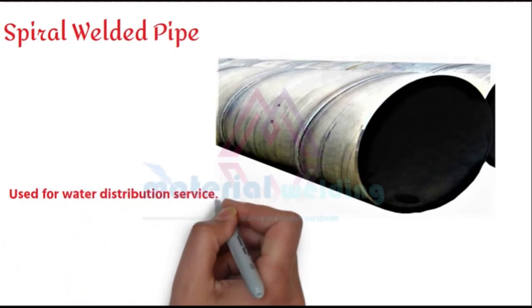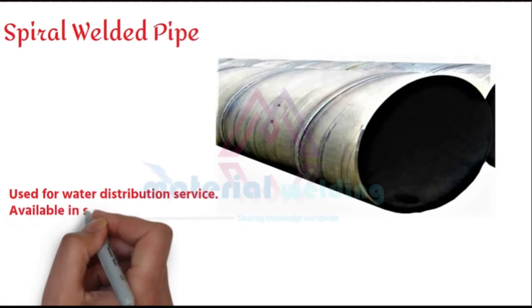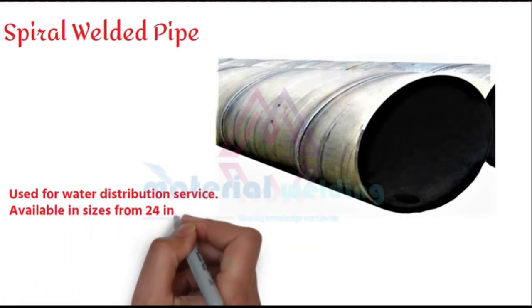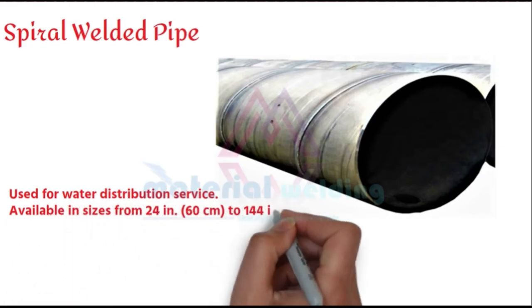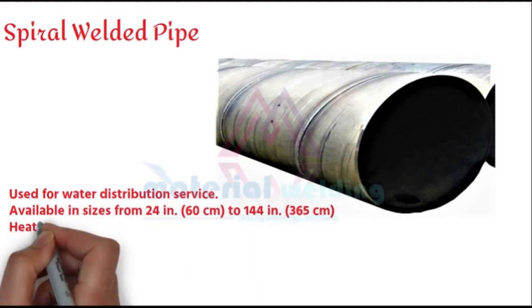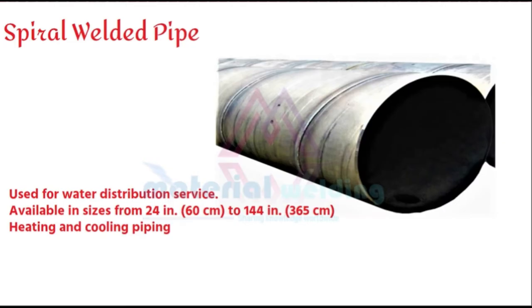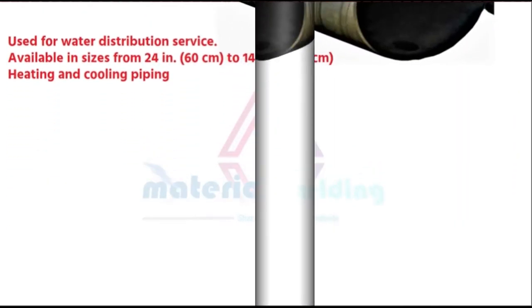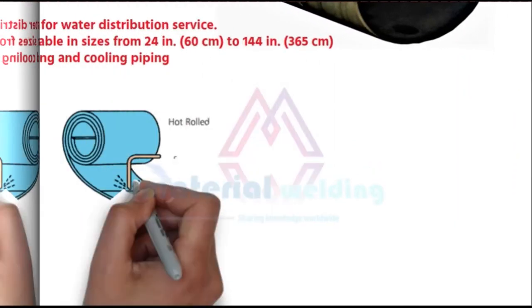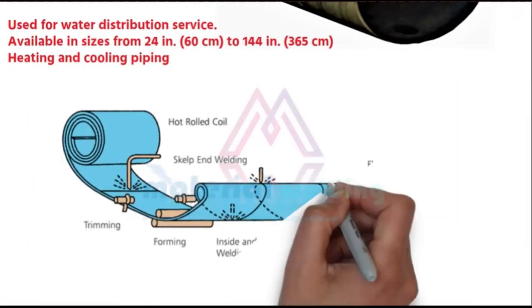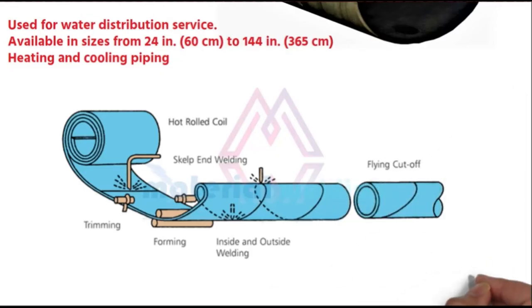Spiral welded pipes are used for water distribution services. They are available from sizes 24 inches to 144 inches. You will notice spiral pipes inducting.